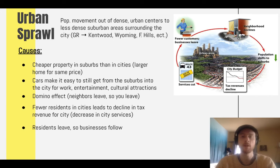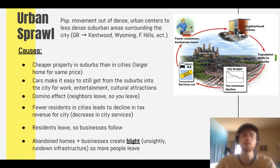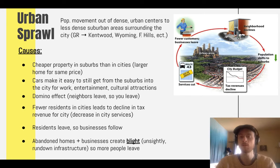With fewer residents and businesses leaving, we eventually get something called blight — the neighborhood declines due to so many abandoned homes and buildings, which drives even more people to leave. This is a positive feedback loop: as more people leave, the city budget declines further, services are cut even more, more businesses leave, and blight worsens. The problem becomes a vicious cycle that feeds into itself, making urban sprawl even worse.